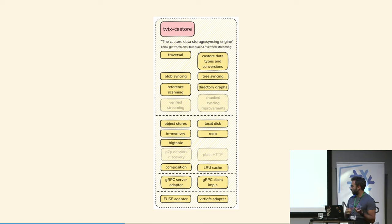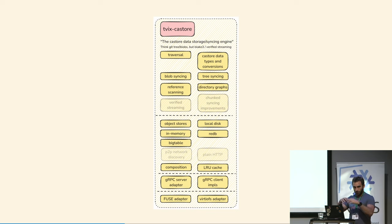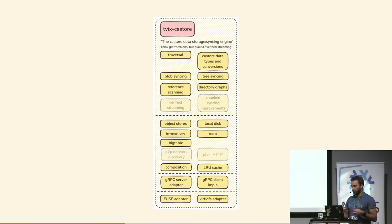We have a bunch of implementations using this: an object store backend, a local disk backend, an in-memory backend, RocksDB as a local database, a Google Bigtable backend, and a bunch of adapters that put this on the network so you can use any of these or any composition of different stores. You can say, use this local thing, but if it's not there ask this other thing, and you can recombine these and have a tiered setup of different stores using different backends.